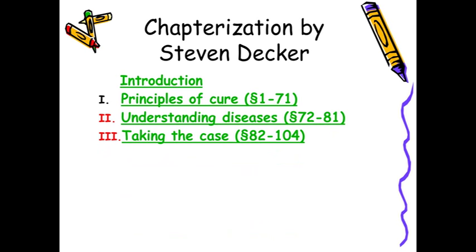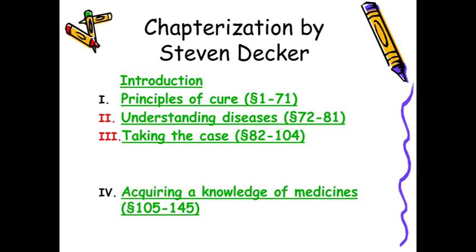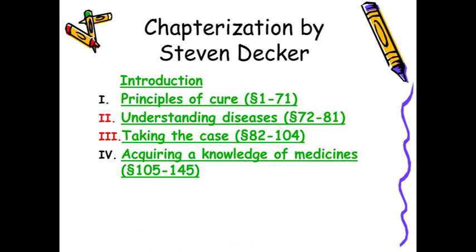The second and third chapters cover understanding diseases, from aphorism 72 to 81 — which we study as classification of diseases — then case taking from aphorism 82 to 104, then drug proving listed as 'Acquiring a Knowledge of Medicine' from aphorism 105 to 145. Up to this was our second BMS course; subsequently organon teaching has been simplified in respective years.